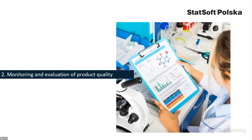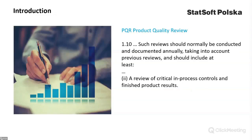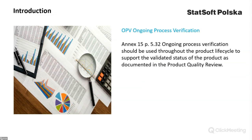The second part of the webinar is dedicated to monitoring and evaluation of product quality. According to GMP requirements, a state of control should be established and maintained by developing and using effective monitoring and control systems for process performance and product quality. The results of critical in-process control and finished product results should be reviewed at least every year during the periodic product quality review. This review often includes a retrospective statistical evaluation of process and product quality using control charts and capability indices. According to Annex 15, manufacturers should monitor product quality to ensure that a state of control is maintained throughout the product lifecycle, with relevant process trends evaluated to confirm the validated status of the product in the product quality review, including statistical evaluation of process and product quality.